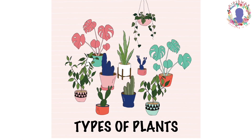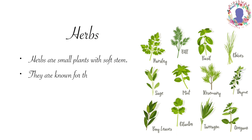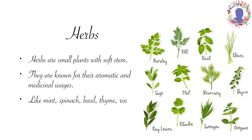We are surrounded by different types of plants around us. Let us take a look at these types. Herbs are small plants with soft stem. They are known for their aromatic and medicinal usages. Parsley, basil, sage, mint, rosemary, thyme, bay leaves, cilantro and oregano are some examples of herbs.